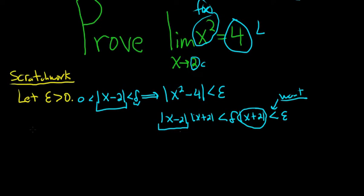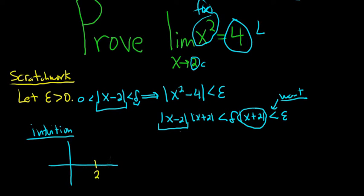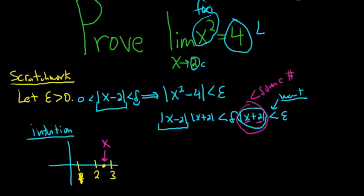You have to have some intuition. What's happening here is that x is getting really, really close to 2. So another number close to 2 is maybe 3, and here's 1. So x is right here. If x is close to 2, it's probably like 2.2 or 2.1. So 2.1 plus 2 is less than some number — if you have any number close to 2 and you add 2 to it, it's still pretty small. This should be less than some number; we just have to figure out a formal way of saying that.